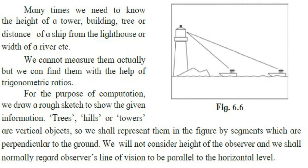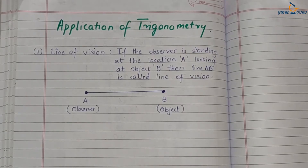We will not consider the height of the observer, and we shall normally regard the observer's line of vision to be parallel to the horizontal level. Now there are some terms related to trigonometry: line of vision, angle of elevation, and angle of depression. I am going to explain these with the help of a diagram.